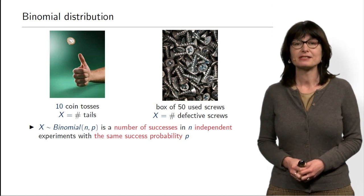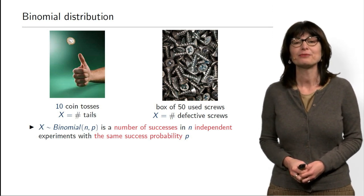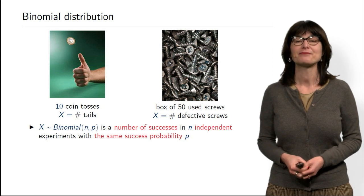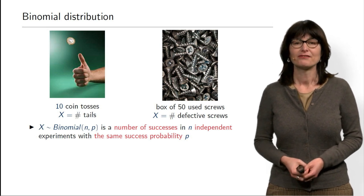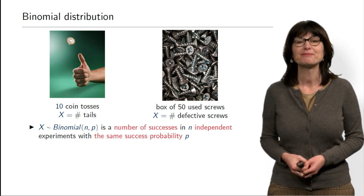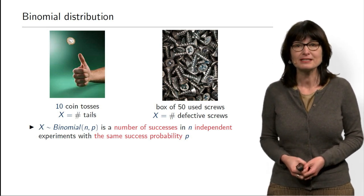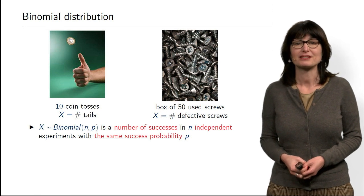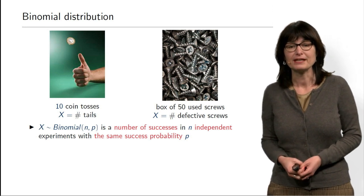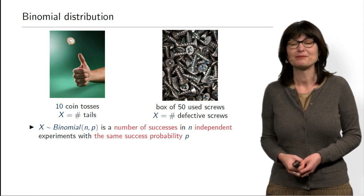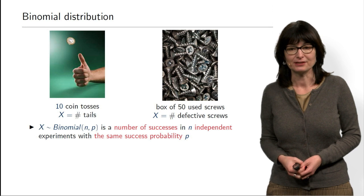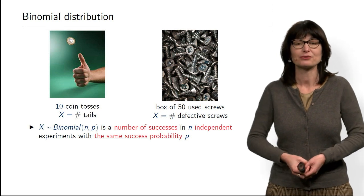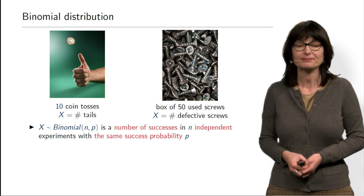In general, as we discussed before, binomial distribution is used as a model in real-life situations when we have N independent experiments and each of the experiments can be successful with probability P, and all experiments are independent of each other. So coin tosses is a classical example.